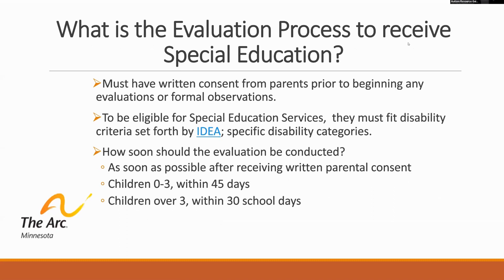What is the evaluation process to receive special education? Schools must have consent from parents prior to beginning any evaluations or formal observations. If eligible for special education services, the child must fit disability criteria set forth by IDEA and specific disability categories. Evaluations should be conducted as soon as possible after parents request it and consent is received. Children from ages zero to three should be evaluated within 45 days; children over three years old should be evaluated within 30 school days.